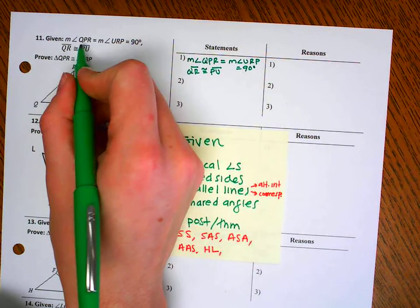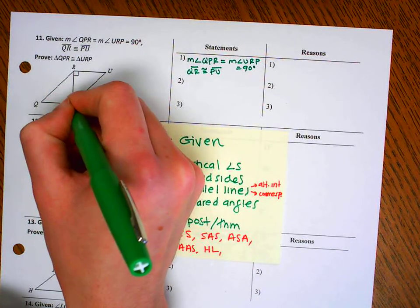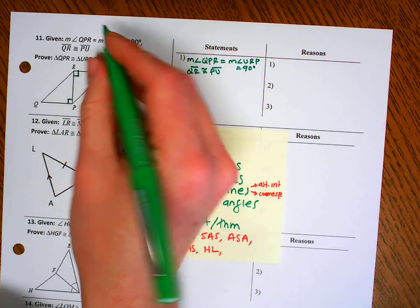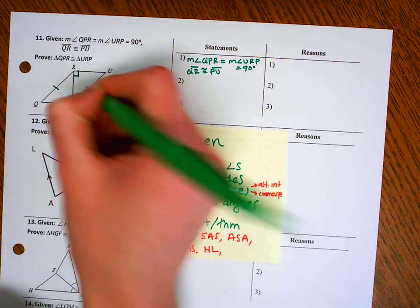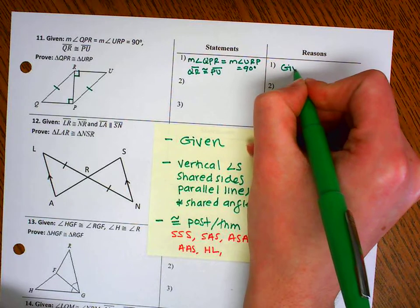Let's make sure it's in our picture. So the measure of angle QPR, this one, is equal to this one. They're both 90 degrees. And it also says that segment QR is congruent to segment PU. Okay, we've done our given. So let's go on to our next step.